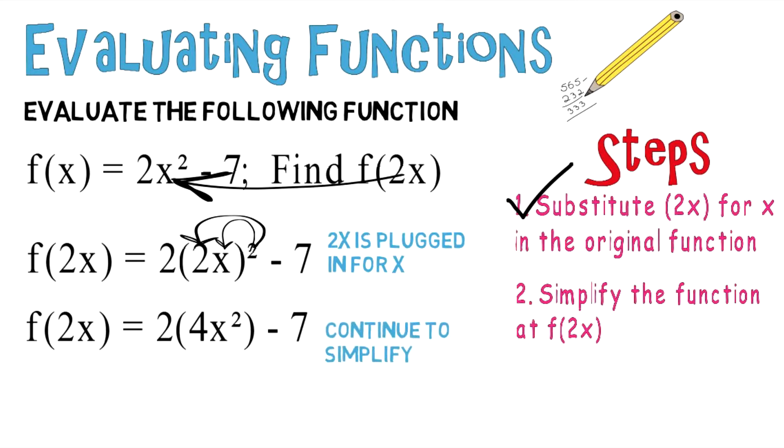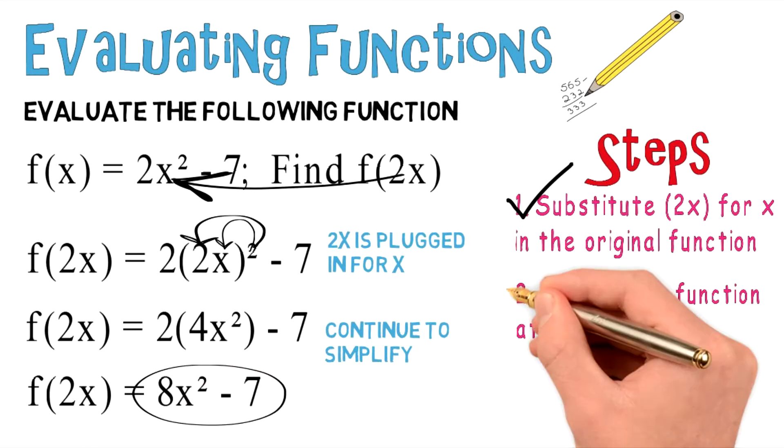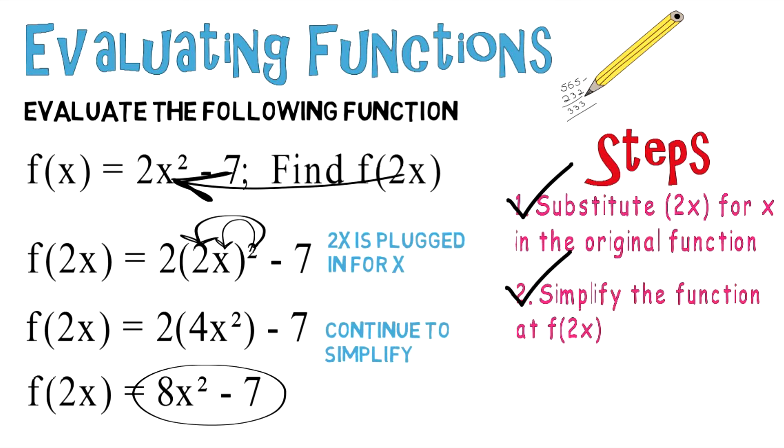Moving forward again, f of 2x equals 2 times 4, which gives you 8x squared minus 7. And that's what you get: f of 2x equals 8x squared minus 7 is your final answer. So you can mark a check for the last step, and keep up the hard work.